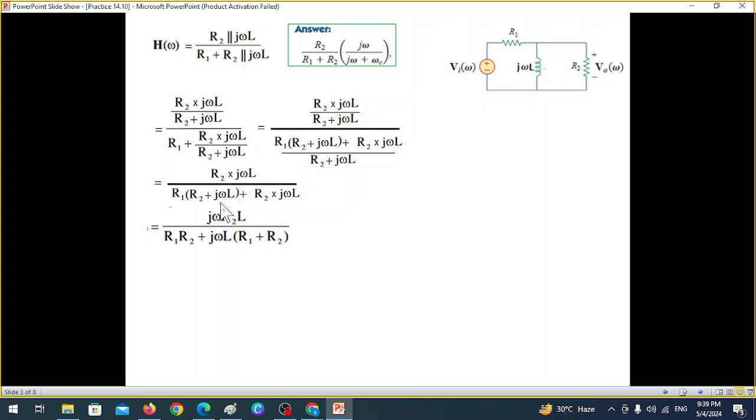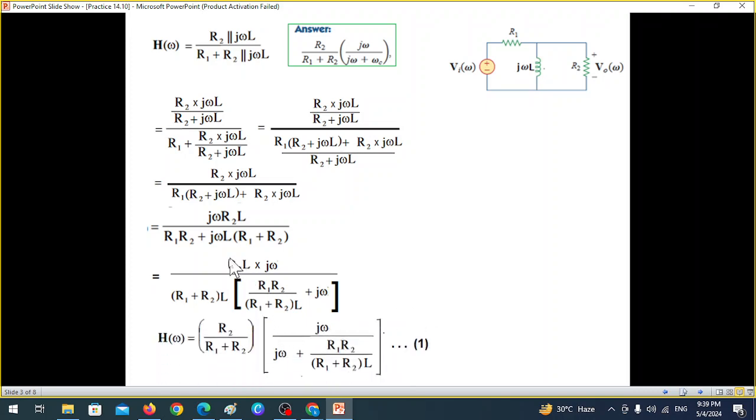So what we will do is, first of all, we'll open this and then take the jωL terms together. And the next step, we're separating R2L and leaving jω here. Similarly, from here, we're taking (R1+R2)L common. So this one will be divided by (R1+R2)L. And from here, it will be only jωL left. And now we are coming close. You see, this one L L gets cancelled. So the first part is matching. And the second part, we have to solve further.